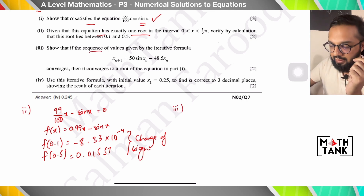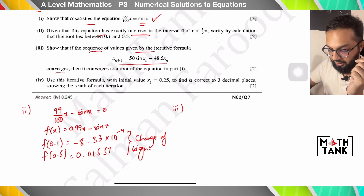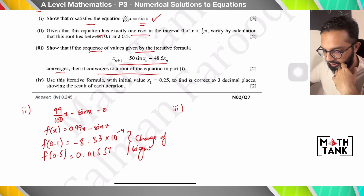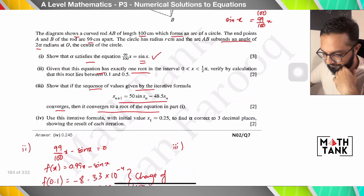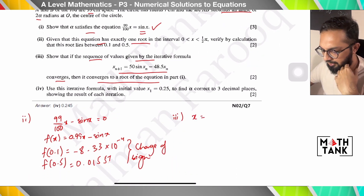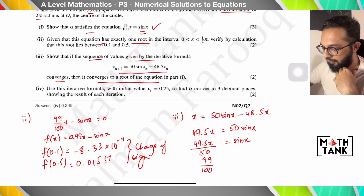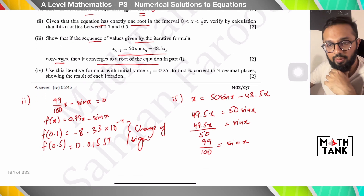Show that if the sequence given by the iterative formula converges, it converges to the root of the equation in part 1. Remove the subscripts and try to rearrange to match the original expression. Working through it: 49.5x brought to one side gives 48.5 + 50 sin x — and this is indeed the same equation, proving the iterative formula converges to the same value.